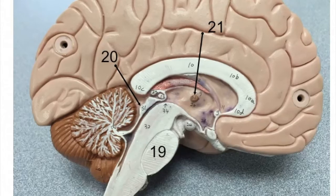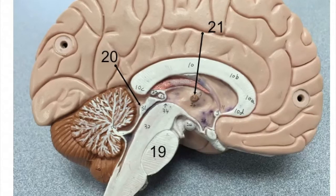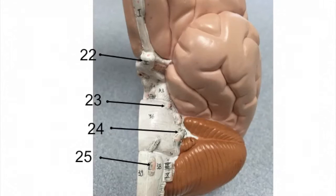Name this structure and what's it a part of. Number twenty-one, name this part of the diencephalon. Number twenty-two, name this cranial nerve, its function, and how to test this function.